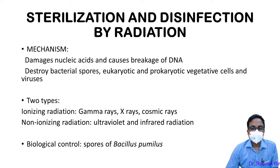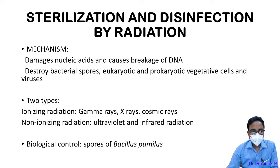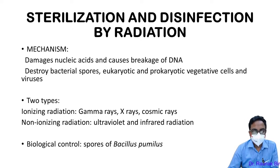Sterilization by radiation: the mechanism is that it damages the nucleic acid, leading to breakage of the DNA. It destroys all types of vegetative cells, eukaryotes, viruses, as well as bacterial spores. The biological control used is spores of Bacillus pumilus.